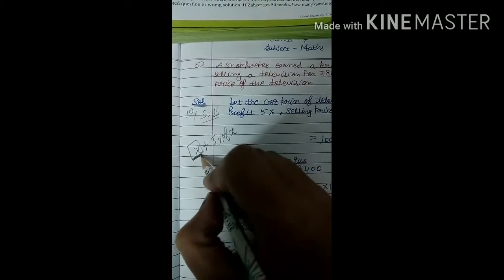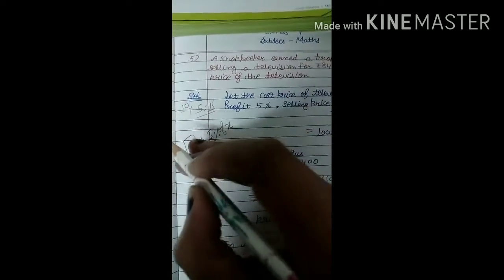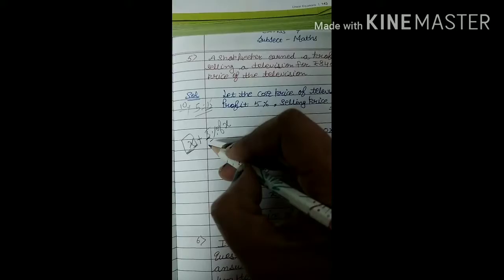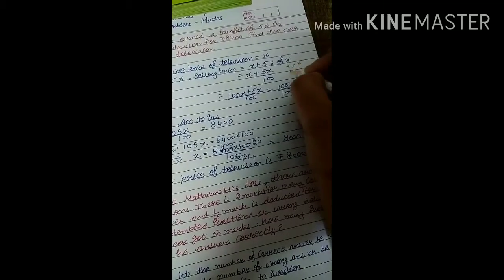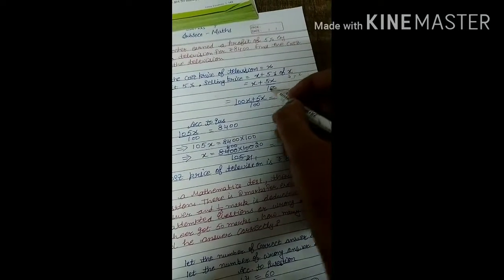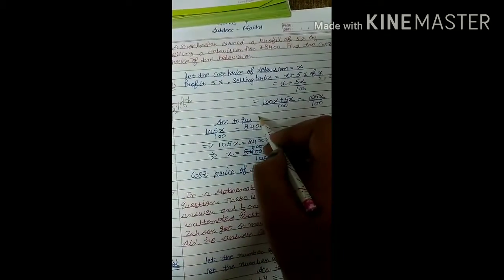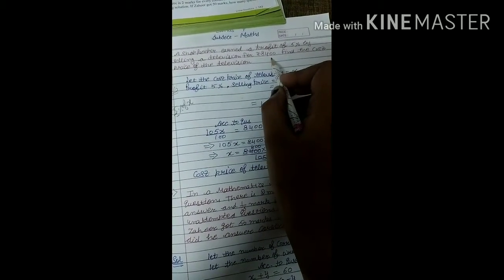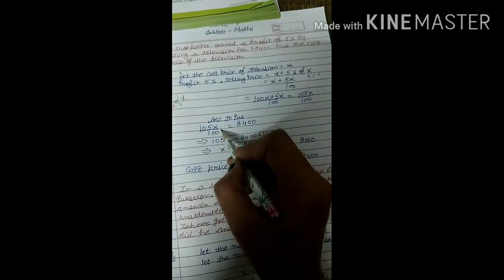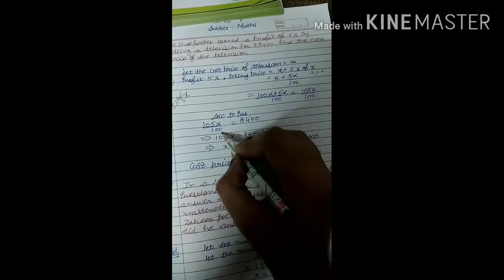So here, the cost price is x, and the profit is 5% of x — that is 5/100 × x, which equals 5x/100. Taking LCM with 100, we get (100x + 5x)/100 = 105x/100. According to the question this equals the selling price, and the selling price is already given as 8,400. So the equation is: 105x/100 = 8,400.